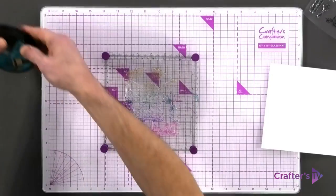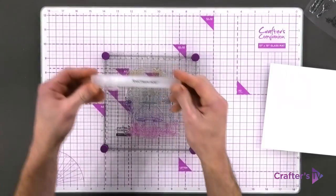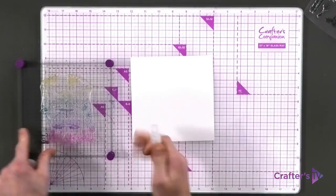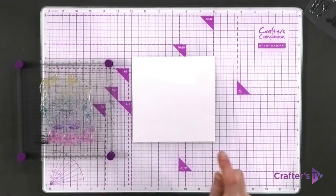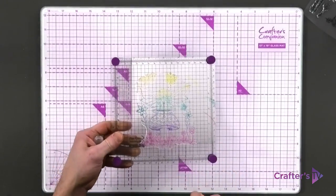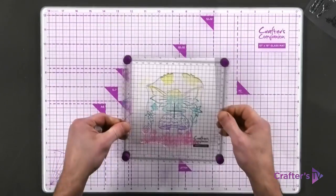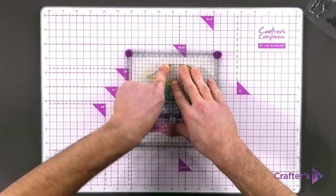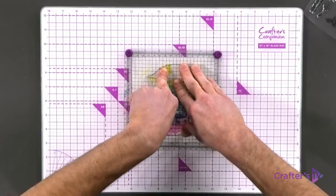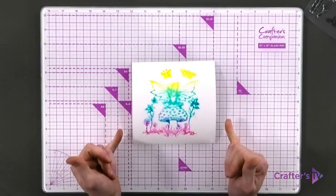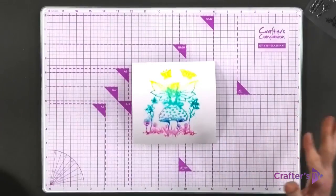I'm taking one of our Spectrum Noir Water Reactive spritz bottles and giving the cardstock a good spritz with water, and also over the stamp. Then we're going to lie it over the top and press. By using the water and water-reactive card, we're going to get this bleed effect. You can see the outline of the image starting to bleed out.